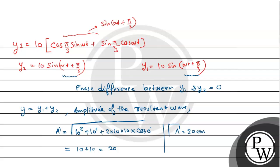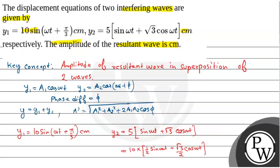So the amplitude of the resultant wave in centimetres is 20. This is our final answer.